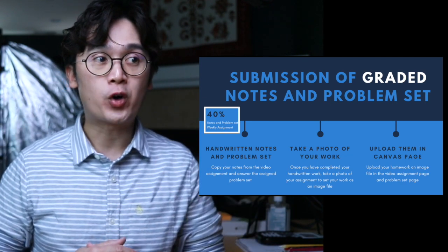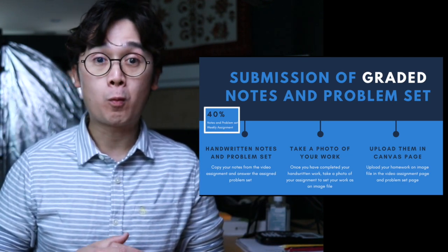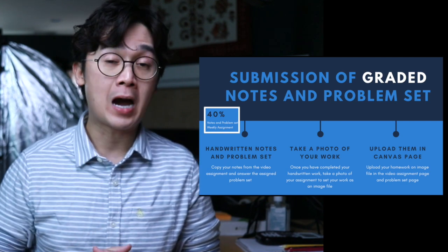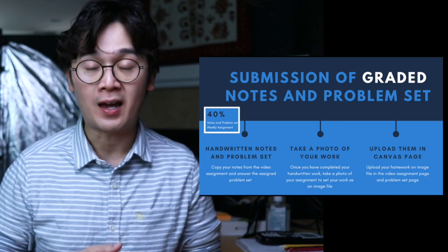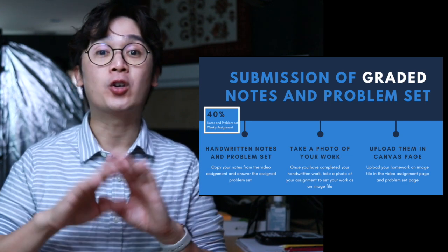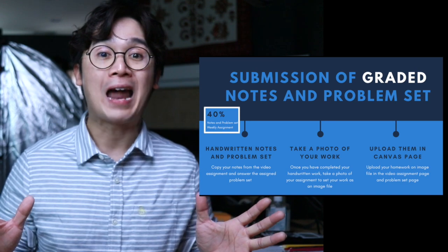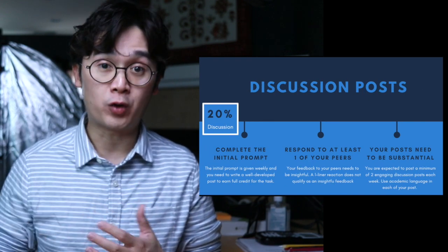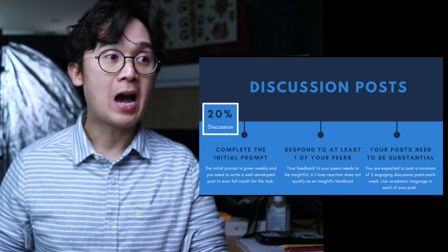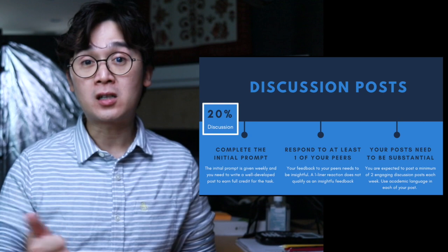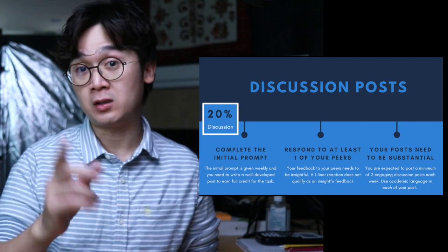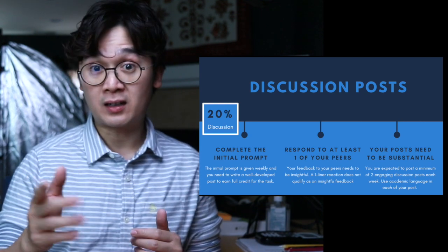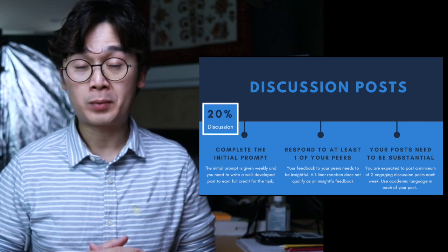The deadline for your homework assignment is Sunday at 11:45 in the evening — that is your deadline each week. The discussion post also has a deadline of Sunday at 11:45 p.m.